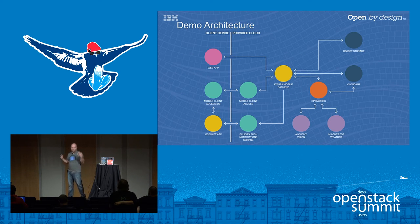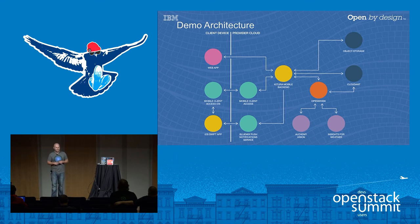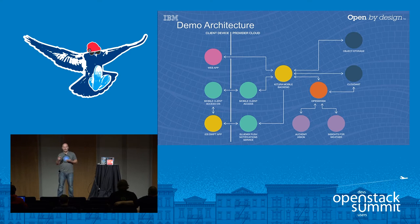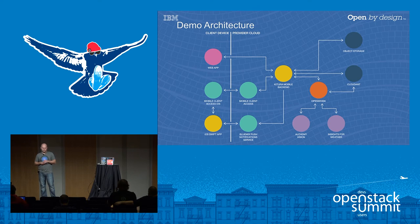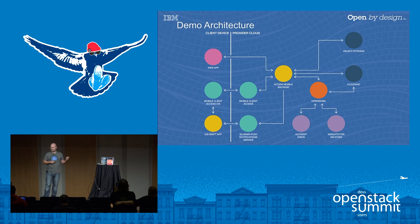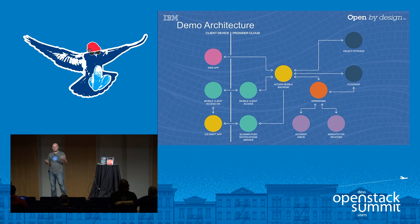We've all been talking about the same sample application here today. It is a mobile application — an iOS mobile application that allows you to upload photos to a backing cloud service. Here it's the Kitura mobile backend, which is our mobile backend as a service, written in the Swift programming language, that in turn has a bunch of associated services: object storage to take the image binary, Cloudant to store the metadata.